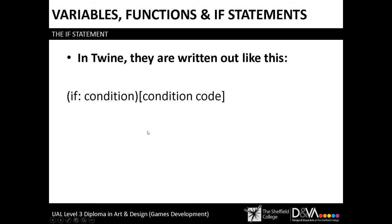In Twine, if statements are written like this. It's written just like the set function initially — you've got open bracket, the word 'if' to tell Twine it's an if statement, your colon, then you ask it the condition. This is where you would put something like HP greater than zero, and then inside these square brackets is where you tell the game what you want it to do.